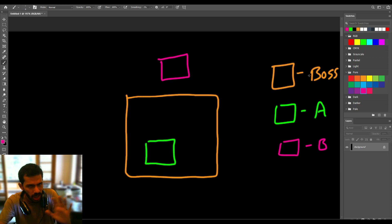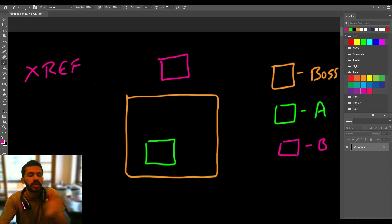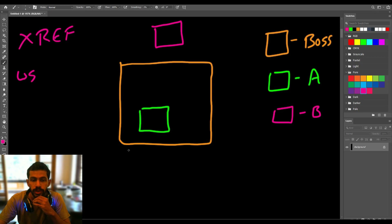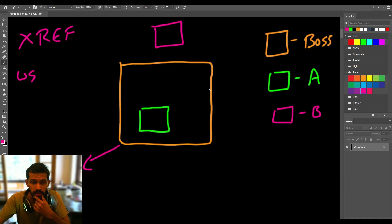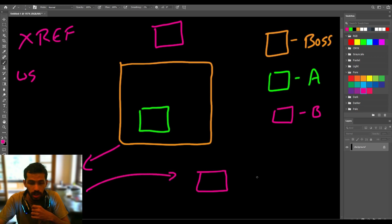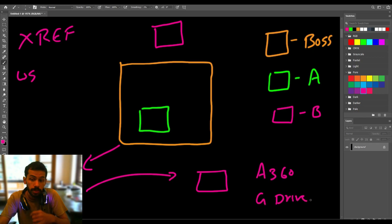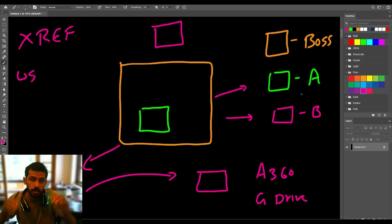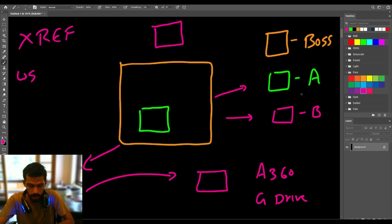It's possible to club all these files together — this is the same concept as external reference in AutoCAD, but with a different name called worksharing. First, we'll be creating a central file, which is the master copy of everything. This central file can be stored in a cloud — like Autodesk 360, Google Drive, or any shared location that can be accessed by both person A and person B. After making a local copy of the central file, persons A and B can work simultaneously in parallel without interfering with each other.